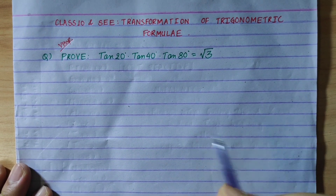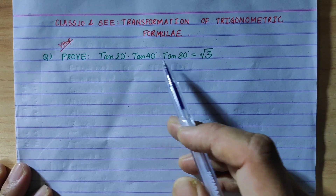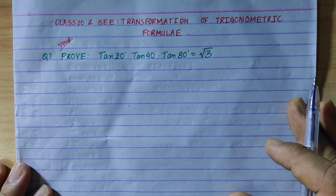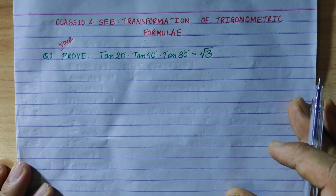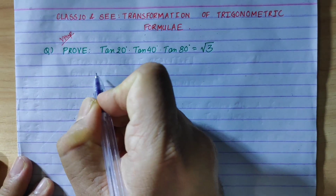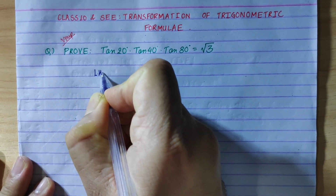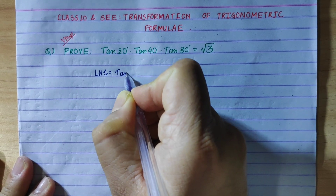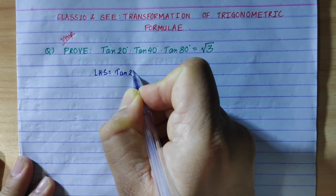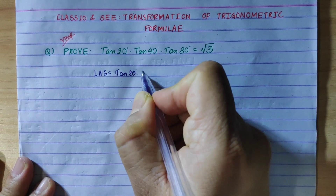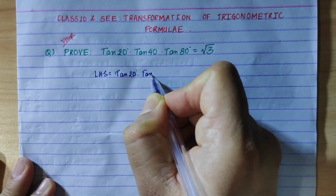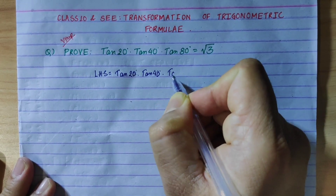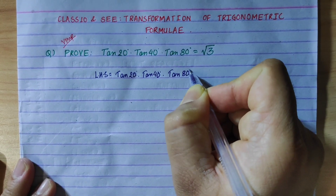So, the question is: tan20 × tan40 × tan80 is equal to √3. We take the LHS: tan20 × tan40 × tan80.